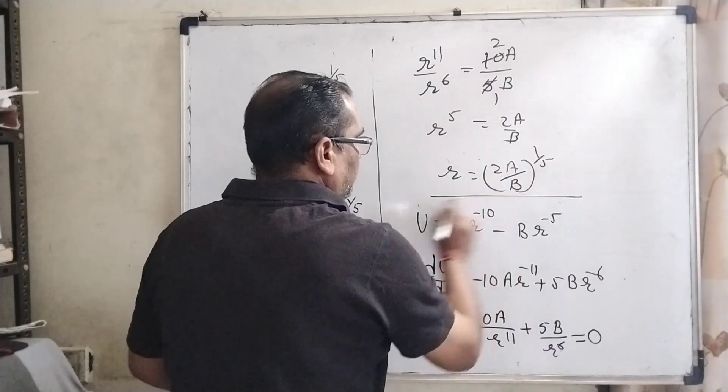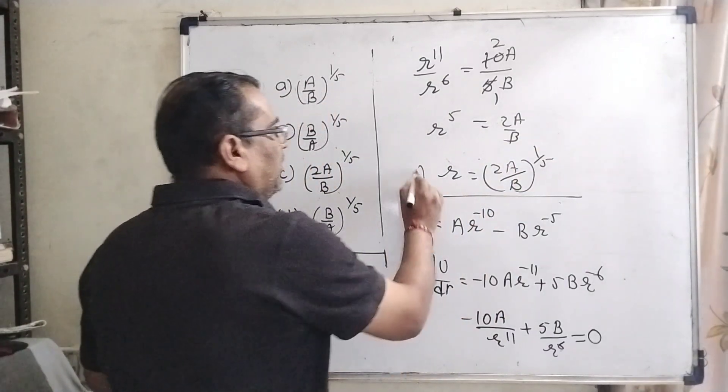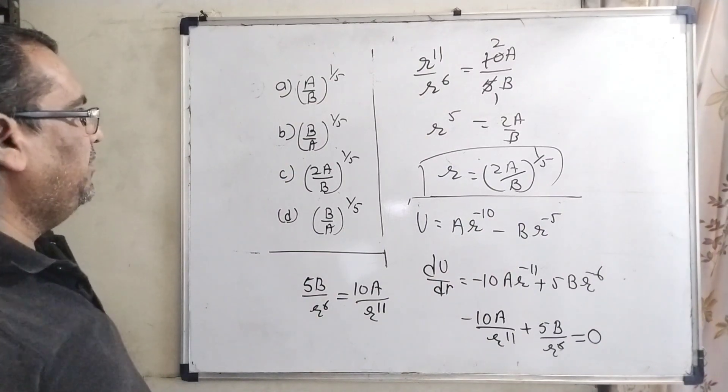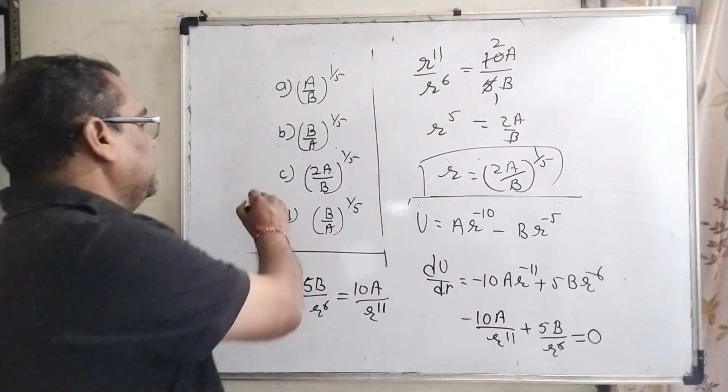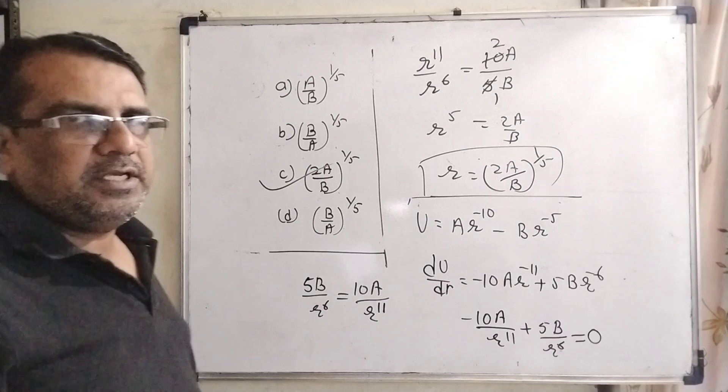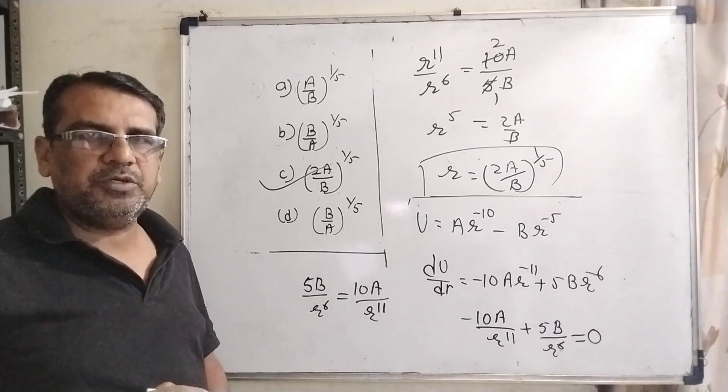Let's see which option is matching our answer. Then 2 A by B raised to power 1 by 5. Yes, option C is correct answer. I hope so you understand this question.